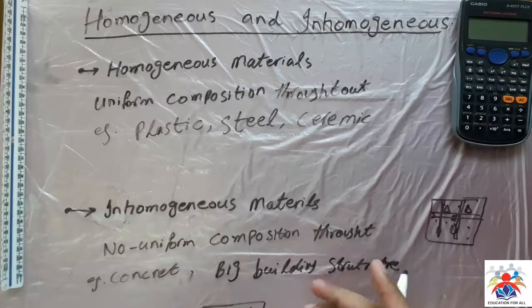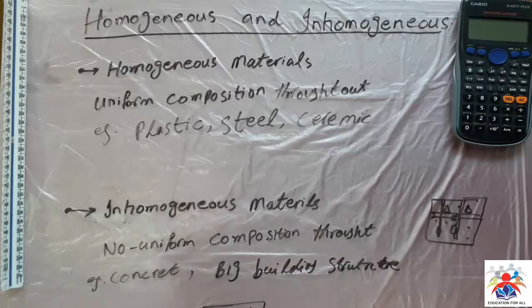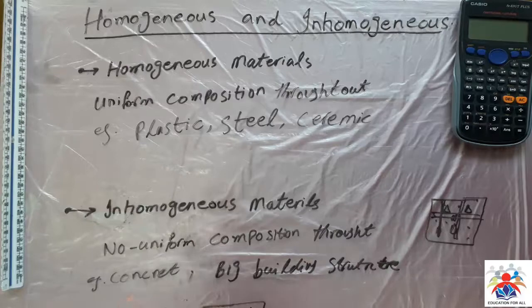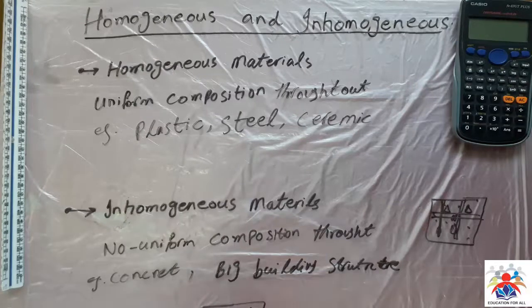And if you talk about a bigger building structure — big buildings are made out of so many different materials. We use concrete, we use glass, we use steel, we use ceramic, we use plastic, we use wood in it. So the whole building is basically an inhomogeneous structure, made out of inhomogeneous materials.